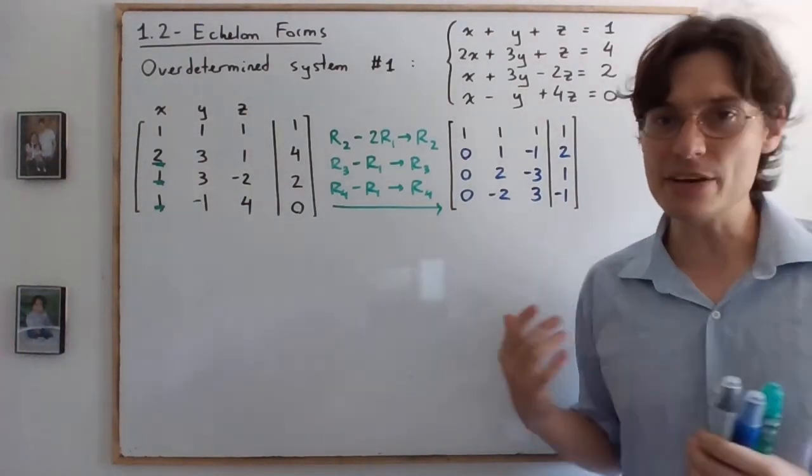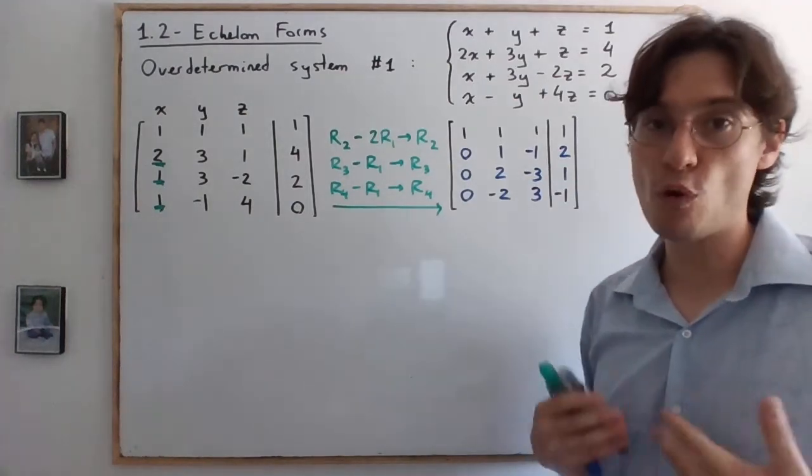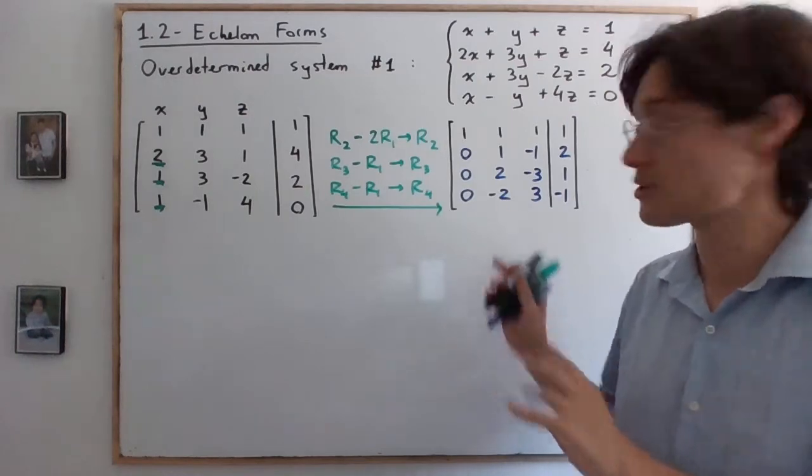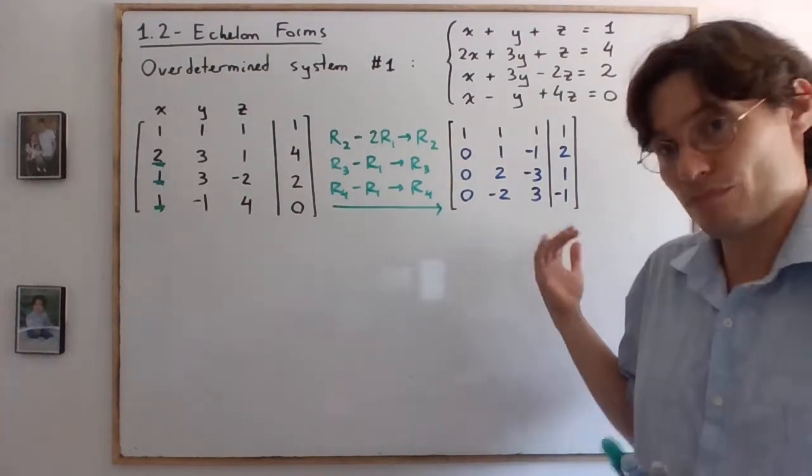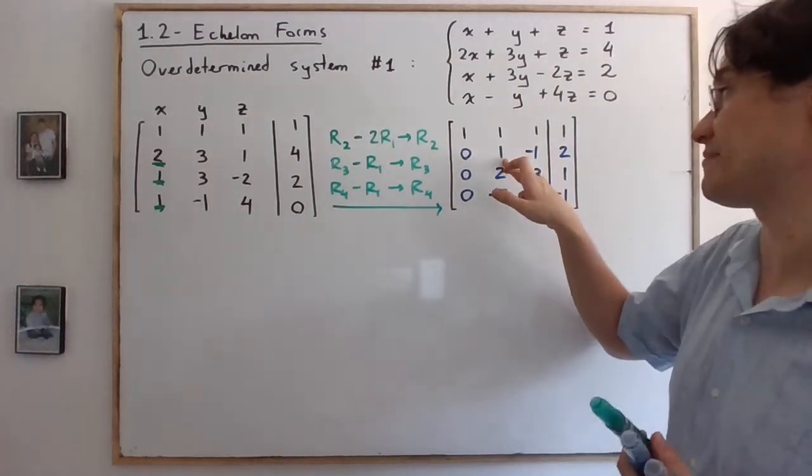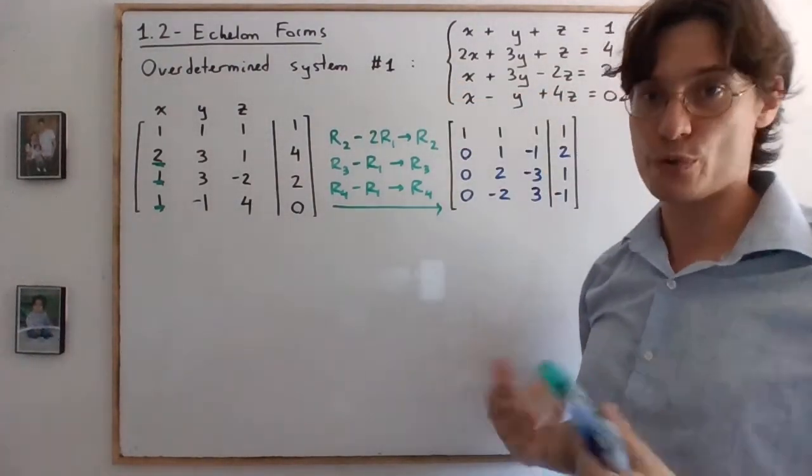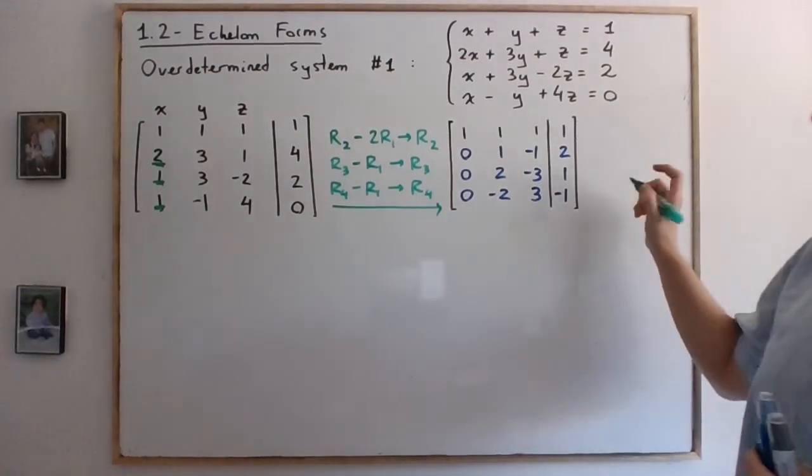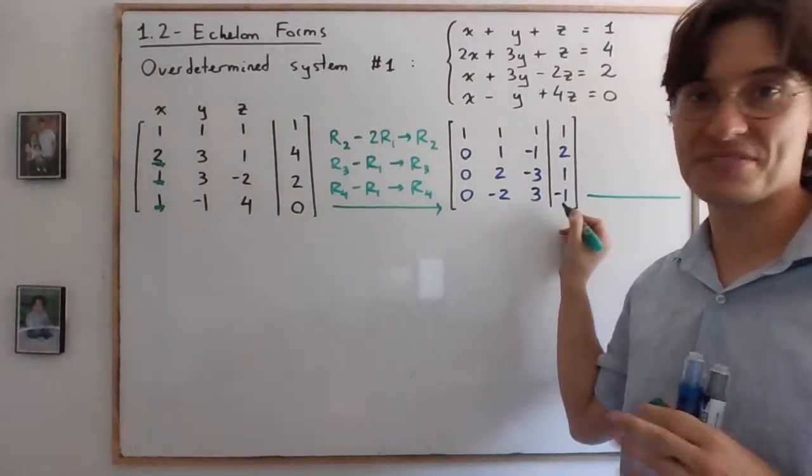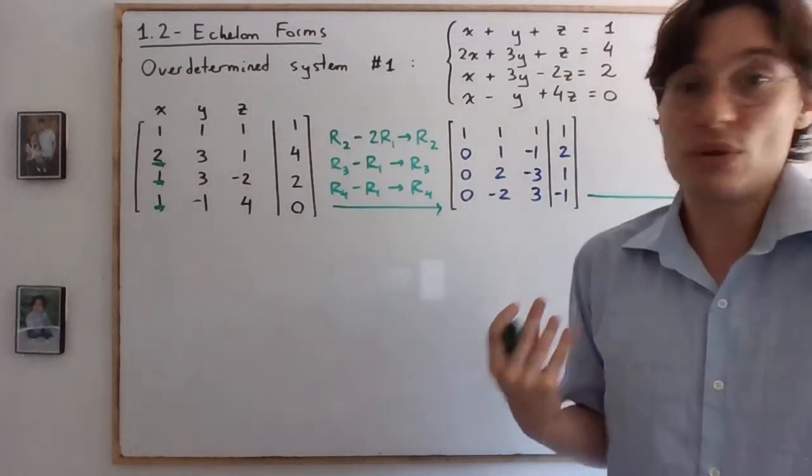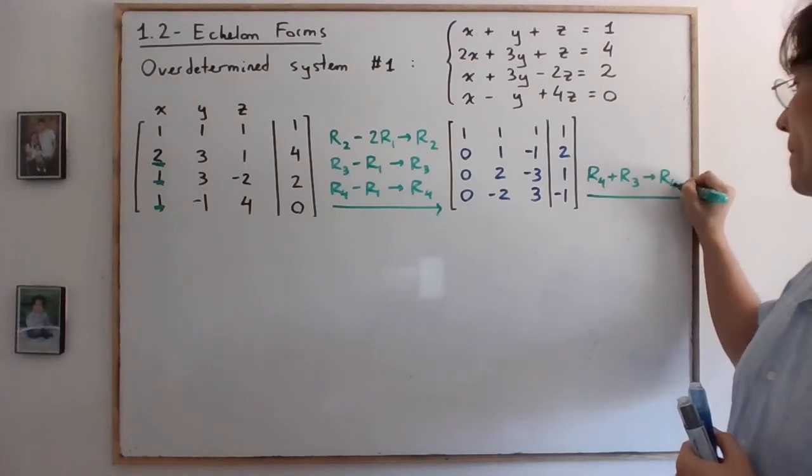Here you should already see that these two rows will cancel. So you could actually do, for example, row four plus row three become the new row four. But what we're gonna do instead, we're gonna take care of this pivot first. Actually, you know what, let's create the row of zeros right away. Sorry for that, my bad. I prefer that because then we do less calculations. So here you go, row four plus row three becomes the new row four.